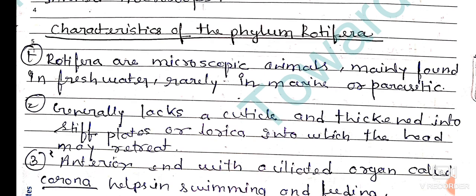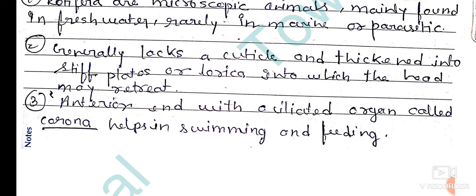Let's talk about the general characters. Rotifera are microscopic and mainly found in fresh water. There are some rare species that are marine or parasitic. They generally lack a true cuticle, but there is an external covering. Sometimes it is thick and becomes a stiff plate.